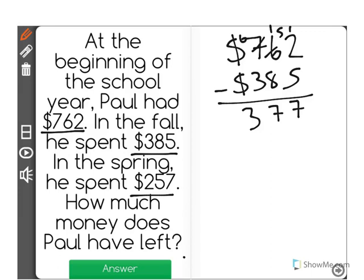That's how much he has after the fall. But then in the spring, he took whatever was left, the $377, and he spent $257 more dollars, which means he no longer has that because he spent it.